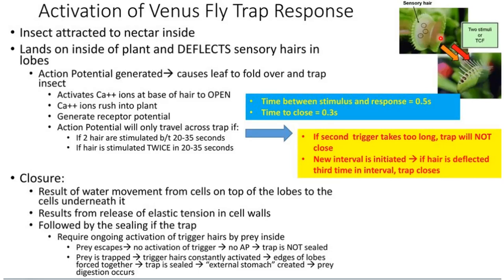Once sealed, the trap acts as an external stomach. Digestive enzymes are secreted, and the prey gets digested over about a week or ten days, after which the trap opens again. However, if the prey escapes, the trigger is no longer activated, no action potential is generated, and the trap is not sealed.